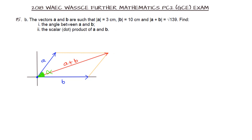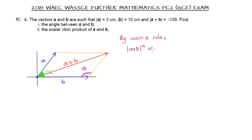Let's call the angle between vectors a and b alpha. Looking at the diagram, we can note another angle, which we will call theta. By the cosine rule — which is the resolution of the parallelogram law of vectors — we can express a, b, and a plus b in a relationship: the magnitude of a plus b squared equals the magnitude of a squared, plus the magnitude of b squared, minus 2 times the magnitude of a times the magnitude of b times cosine of angle theta.